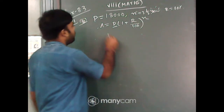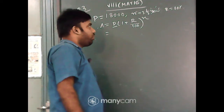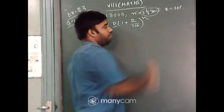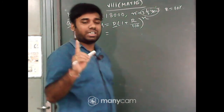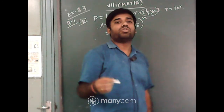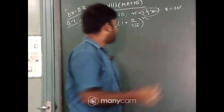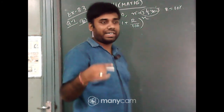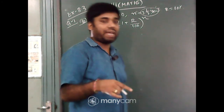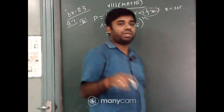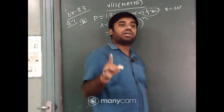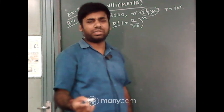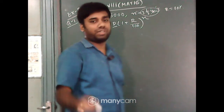Now, just put in the values of P, r, and n. But one problem is that the time is 2 and a half years. For calculating this, first we take 2 years, then we go for the remaining half year. So first we take n equal to 2, and after getting the amount at the end of 2 years, we use that amount as the new principal to calculate the amount for the next 6 months.